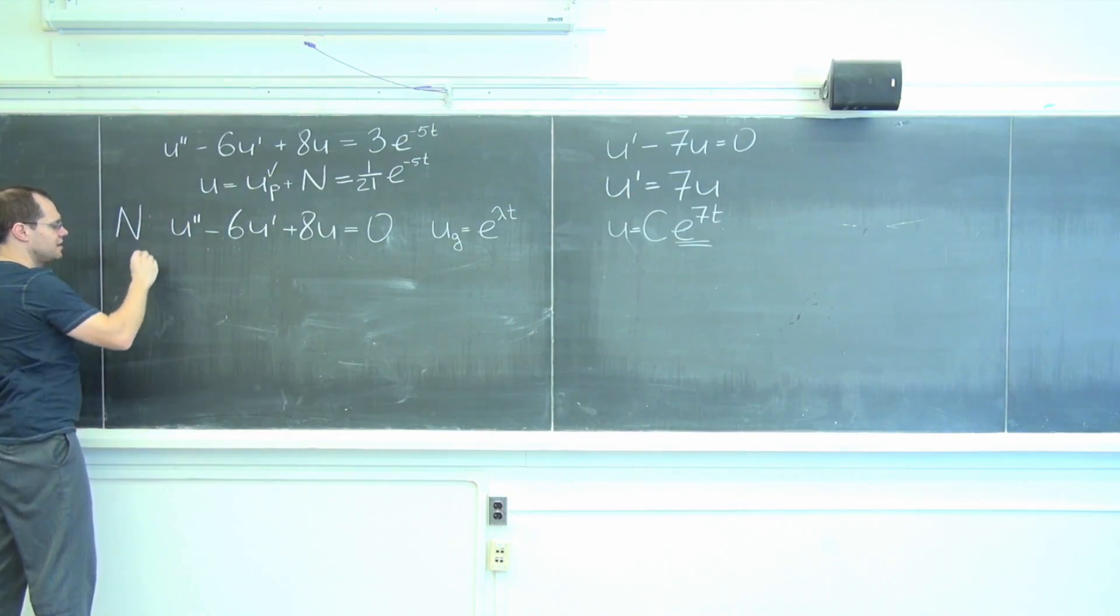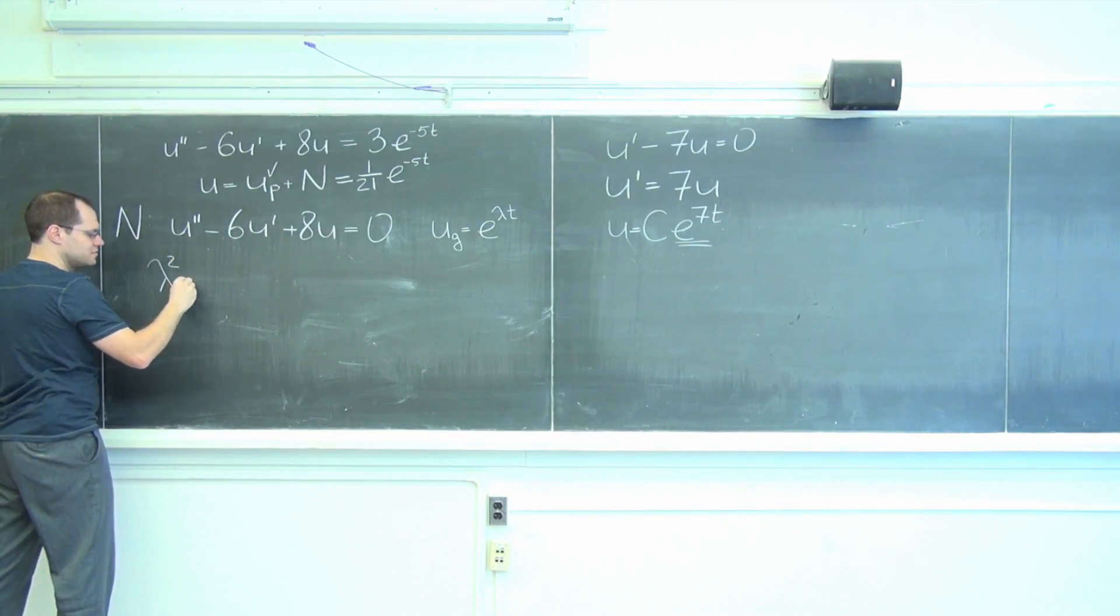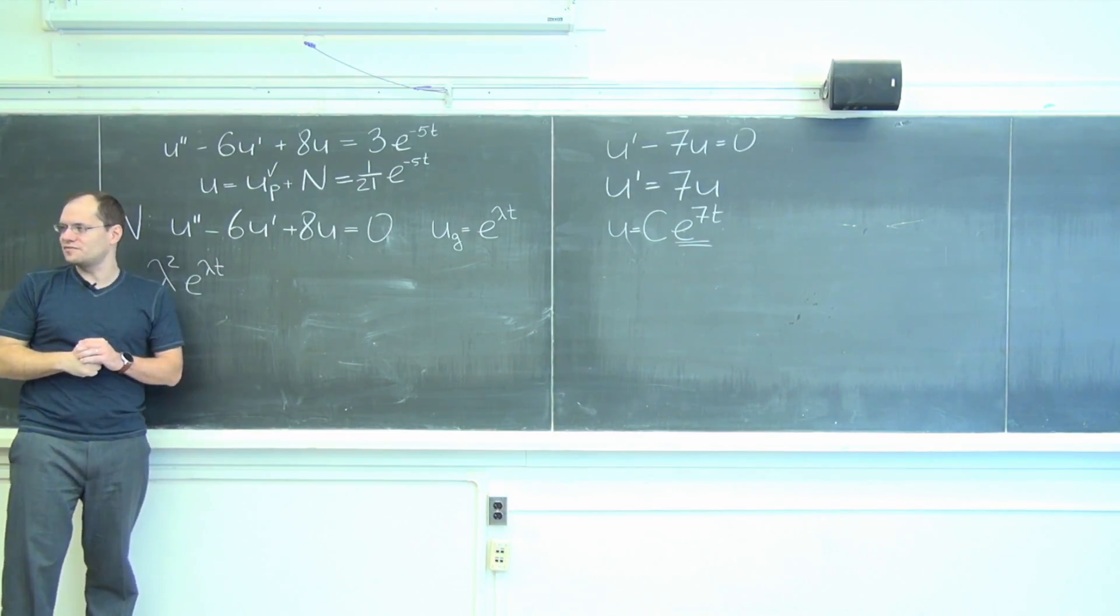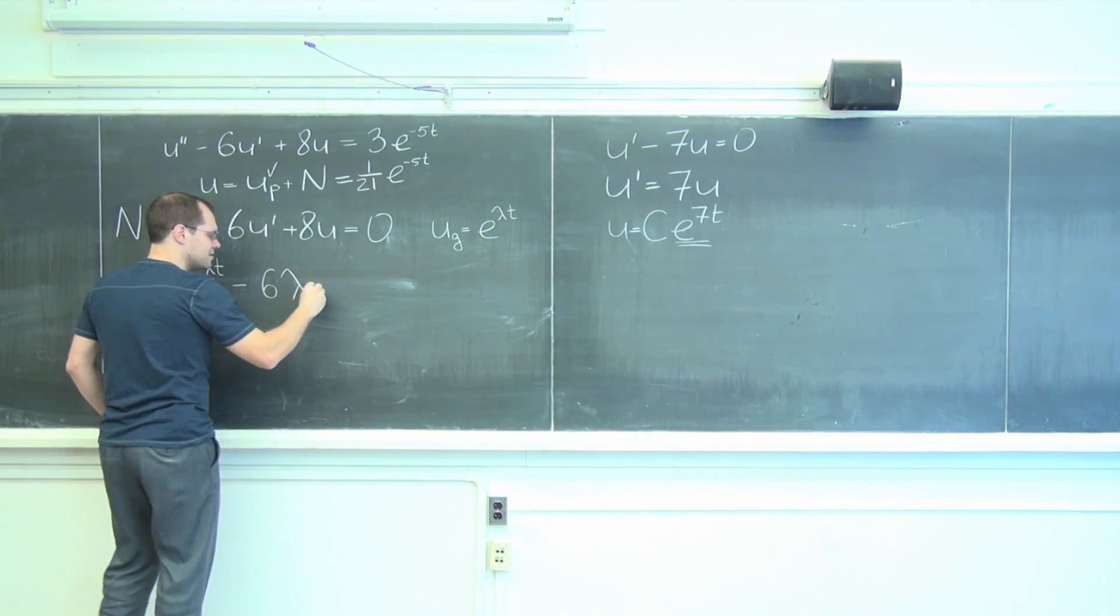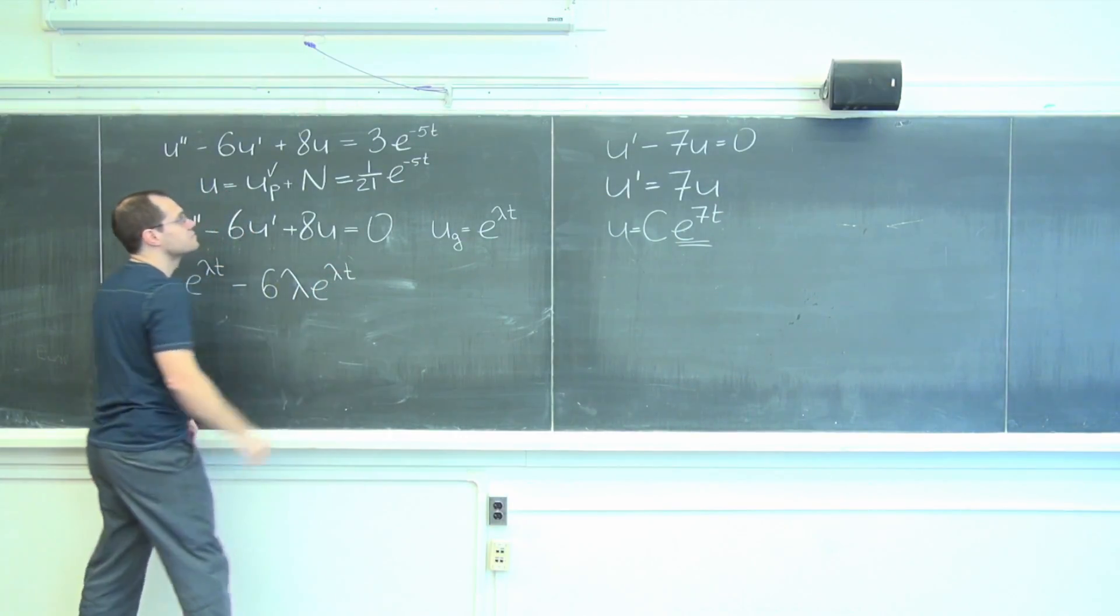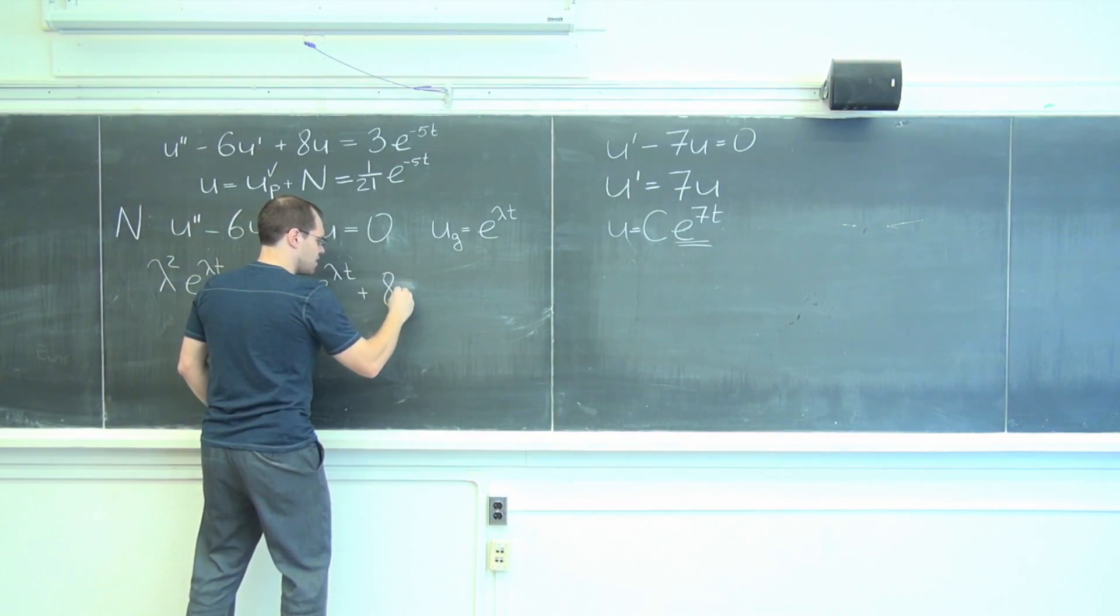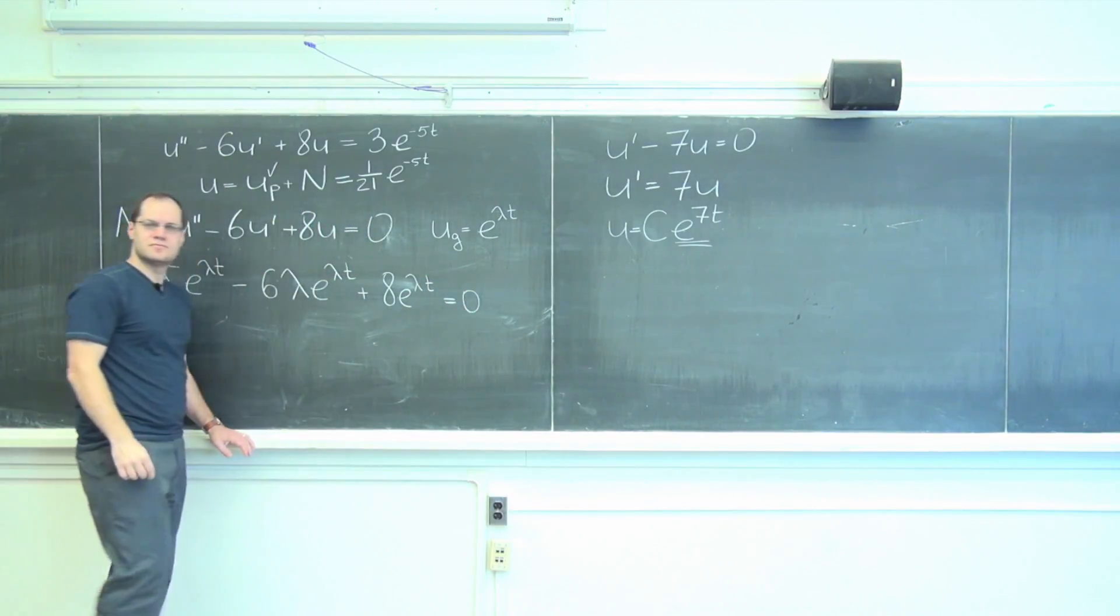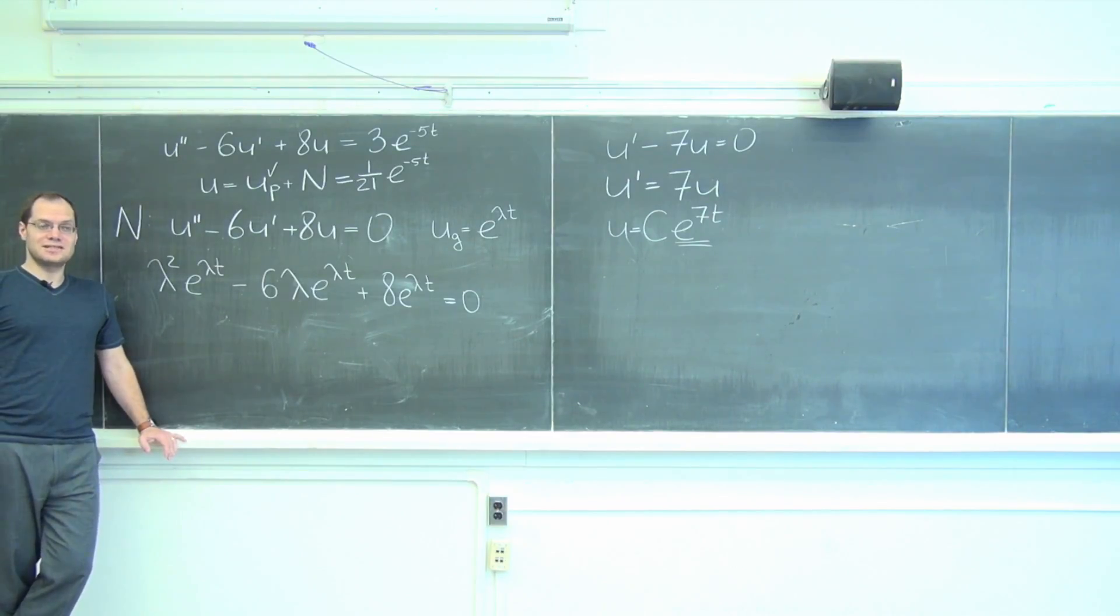I will now plug it in and I will clearly get lambda squared e to lambda t. Do you agree with me that this is the second derivative? Minus 6 lambda e to lambda t plus 8 e to lambda t equals 0.